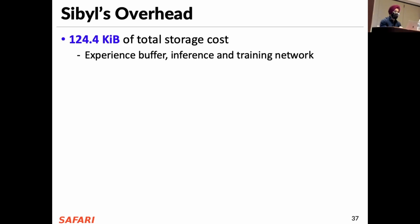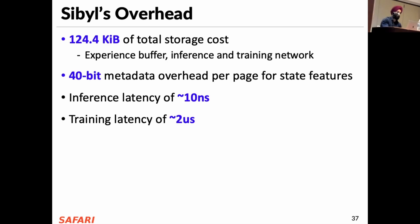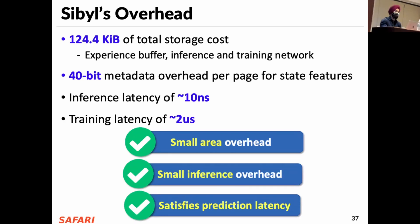All of Sybil's performance benefits come at a modest cost of 124.4 kilobytes for storage — needed to implement the experience buffer. We use a really small network for inference and training. We need 40-bit metadata overhead per page for state features. The inference latency is only 10 nanoseconds, which is orders of magnitude lower than the I/O read latency of even a high-end SSD — for example, the Samsung Xenad has a 3 microseconds latency. Training requires 2 microseconds, but since training and inference happen asynchronously in the background, it is not in the critical path. Sybil provides small area overhead and small inference overhead, satisfying prediction latency requirements.